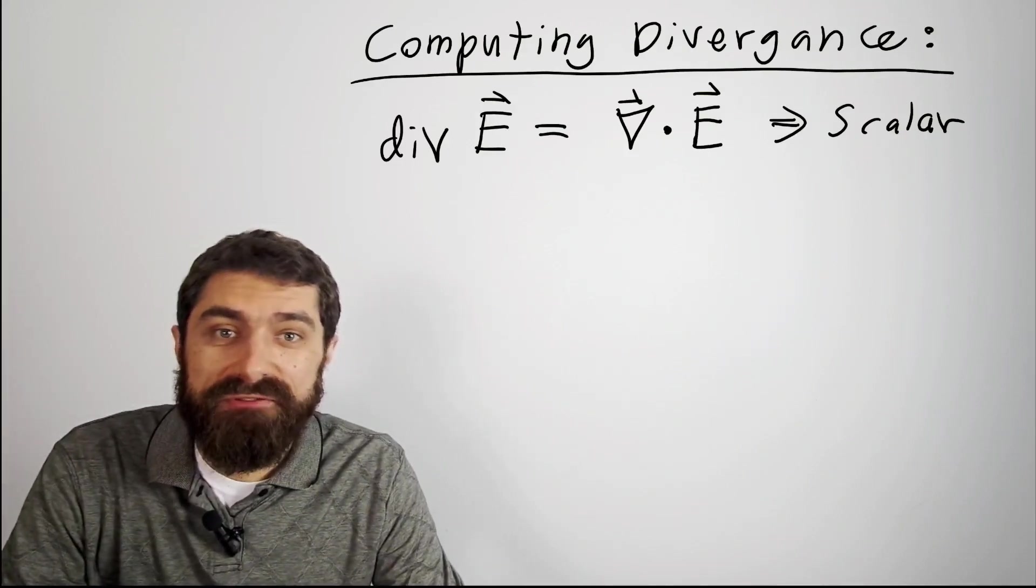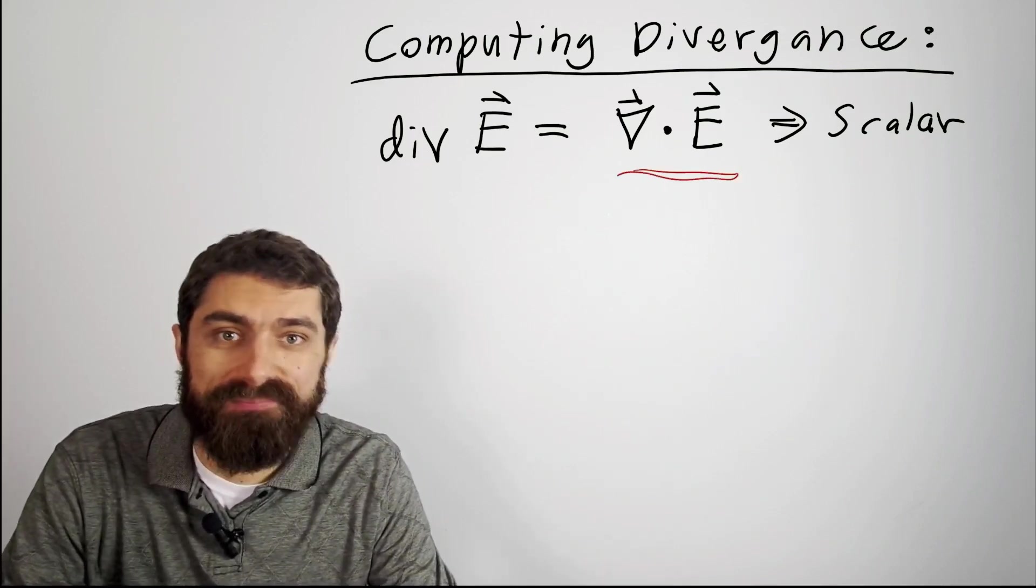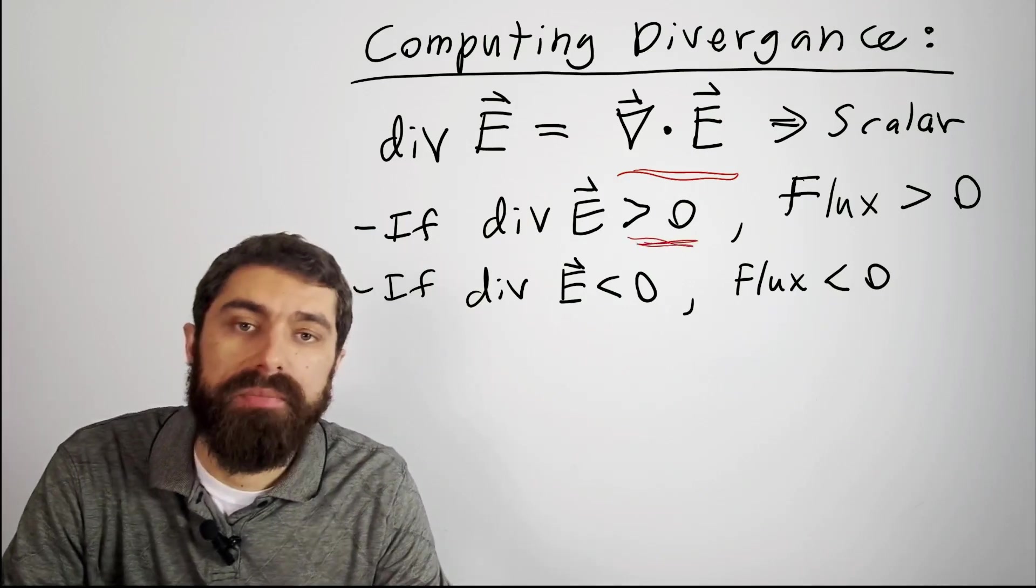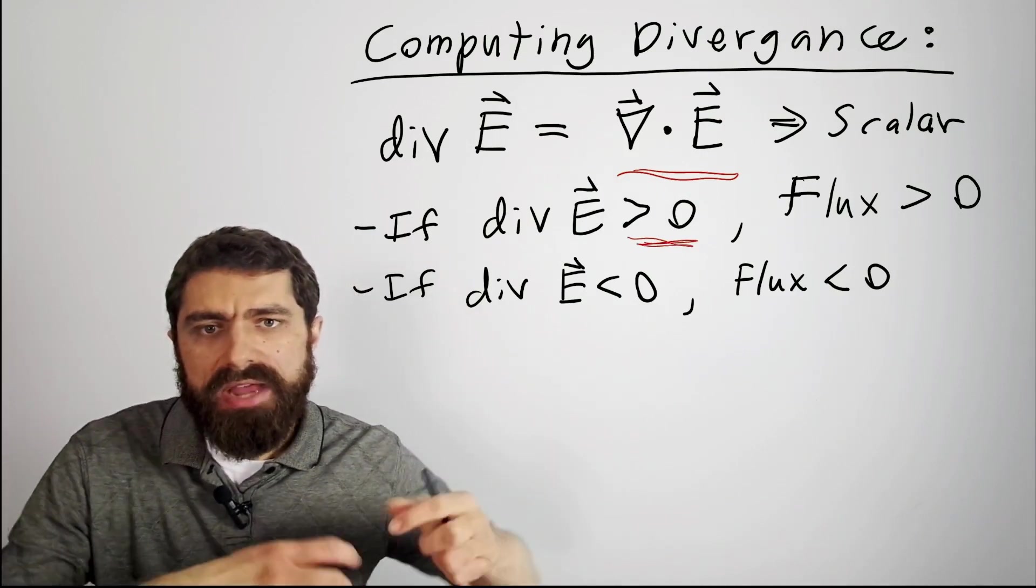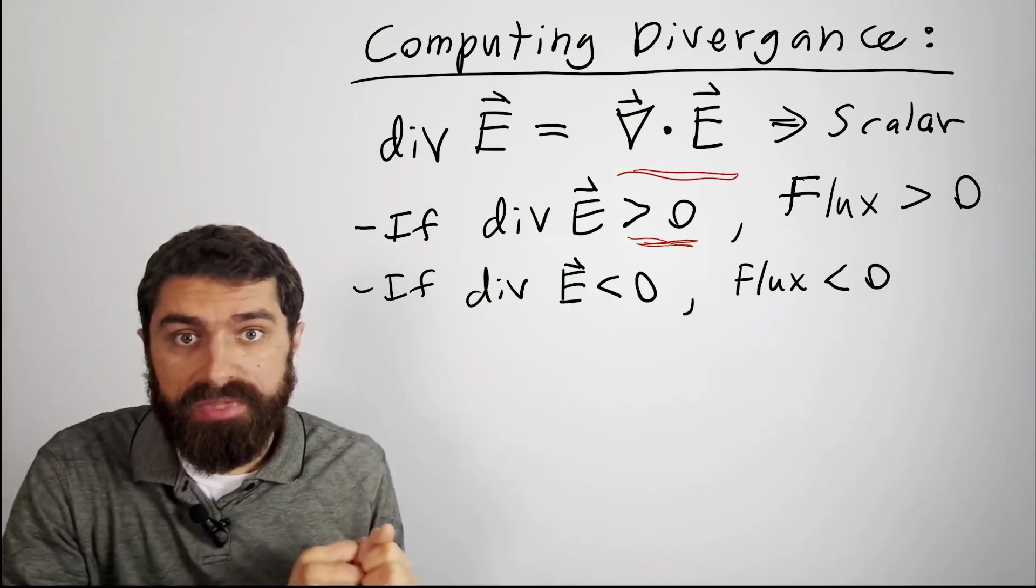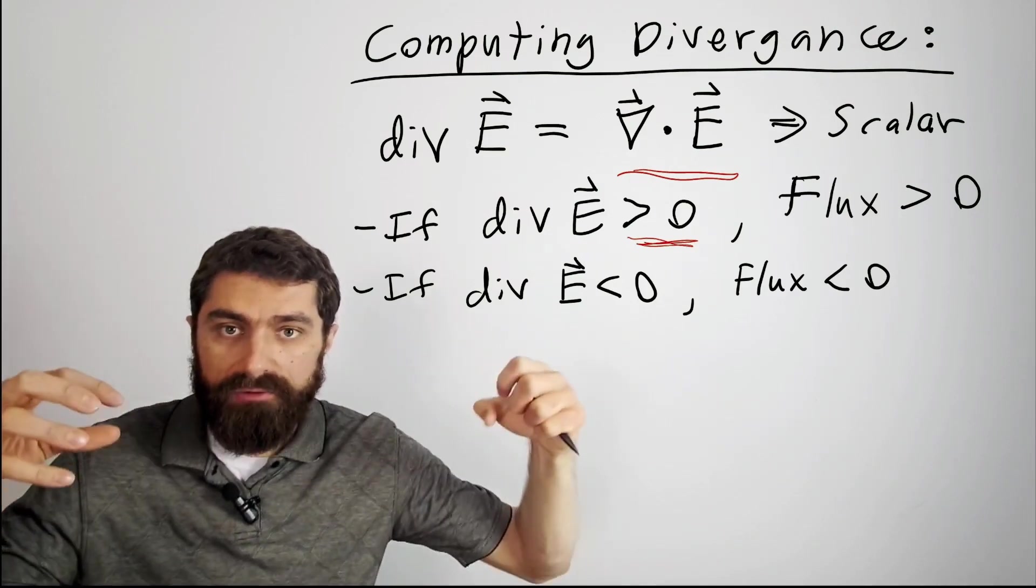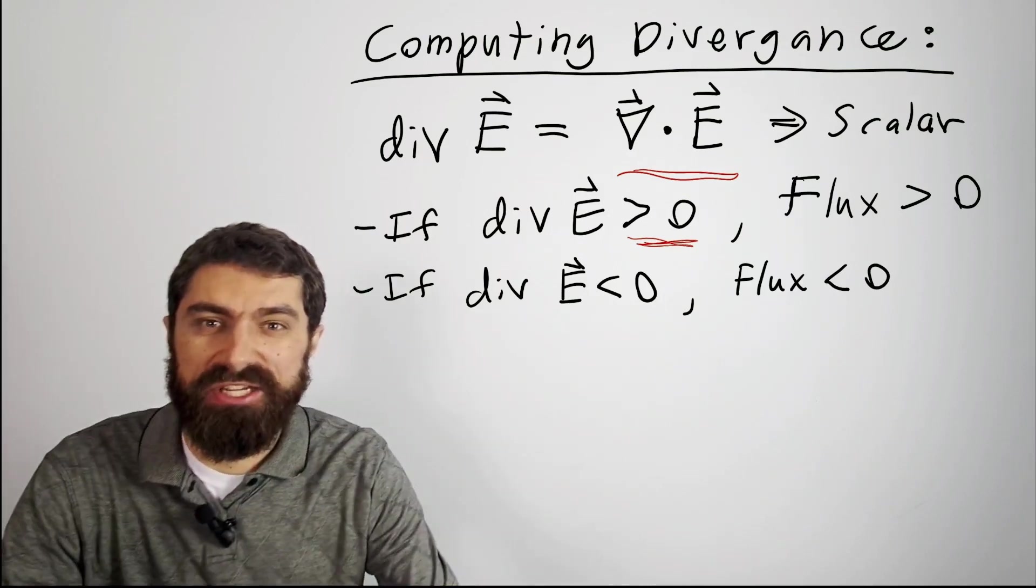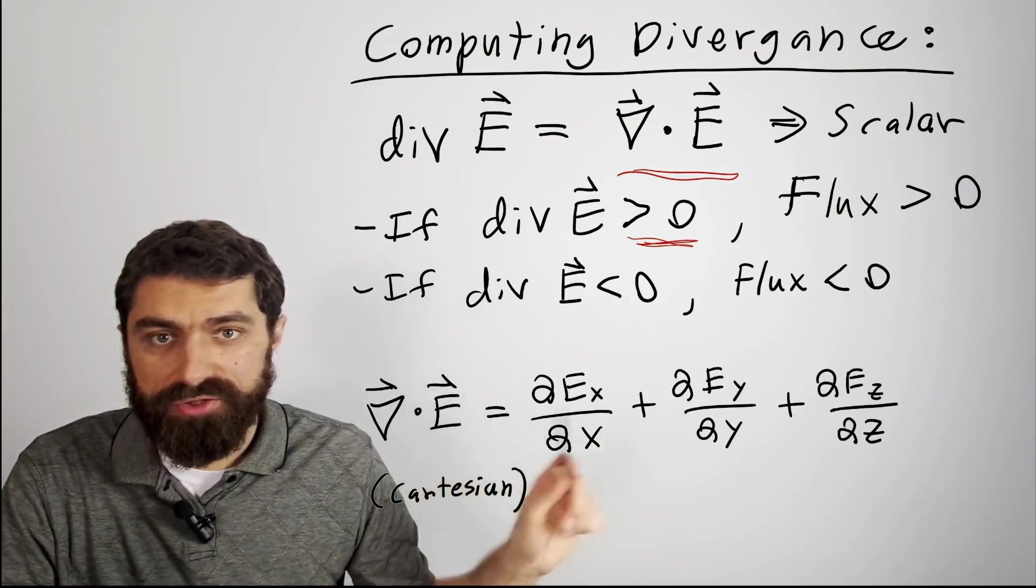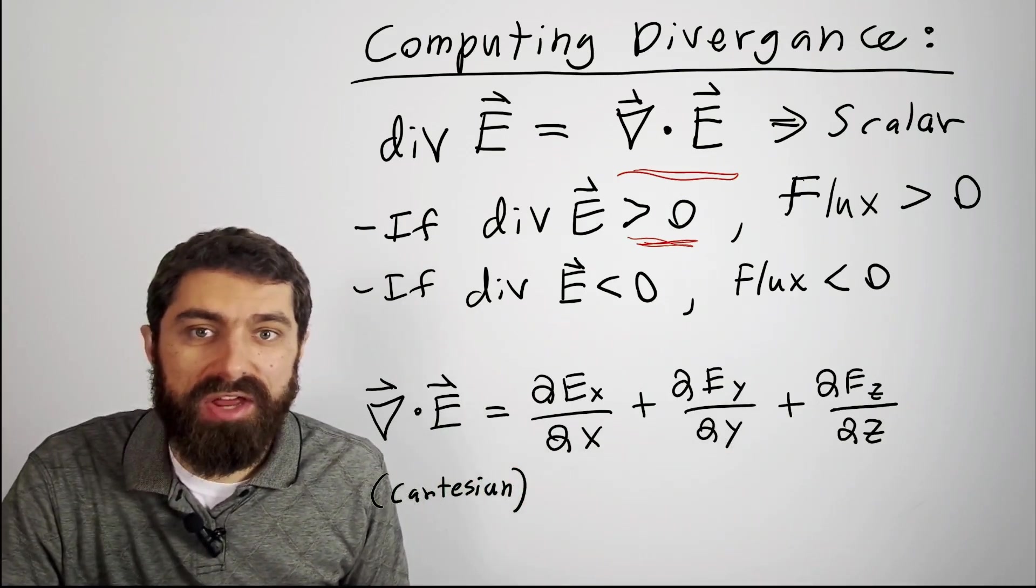The divergence of an electric field, or any vector field, is just equal to del dot E. So if the divergence del dot E is greater than zero, what that means is that the net flux or flow is flowing out of the point. If it's negative, then it means that there's a net flow of electric field going into that little tiny cube. In Cartesian coordinates, this is actually mathematically fairly straightforward to calculate. That would be del dot E.